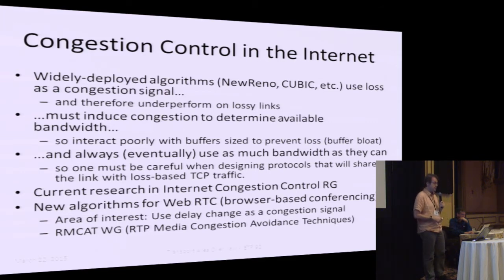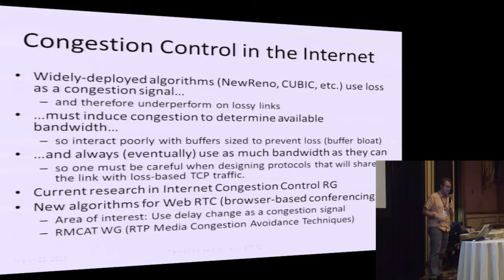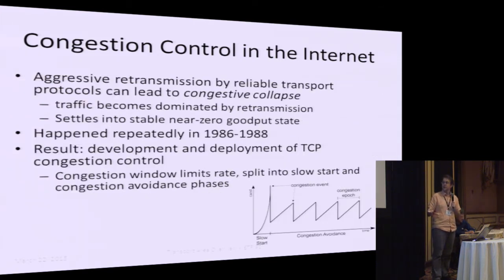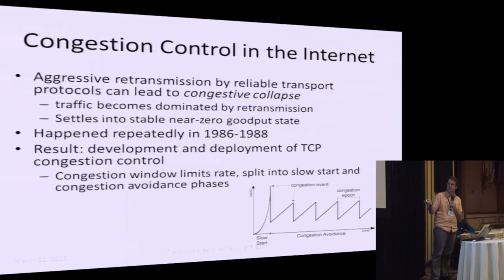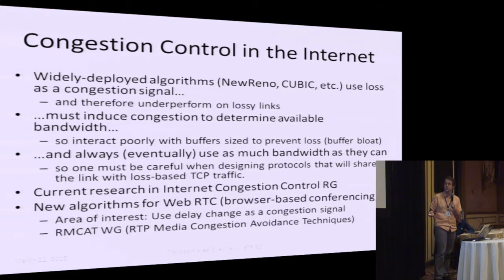A third problem is TCP friendliness. Loss-based TCP traffic will always eventually use as much bandwidth as it can — it keeps probing, the congestion window keeps going up. If you're designing protocols to share a link with loss-based TCP traffic, you need to take TCP behavior into account. There's fair amount of current research on this in the Internet Congestion Control Research Group, which meets tomorrow morning. There's also a working group looking specifically into congestion avoidance techniques for RTP real-time transport protocol media.